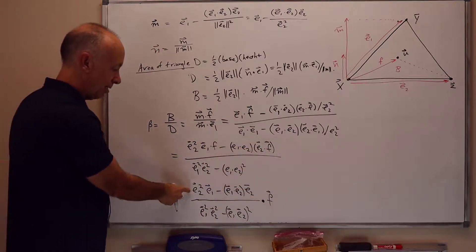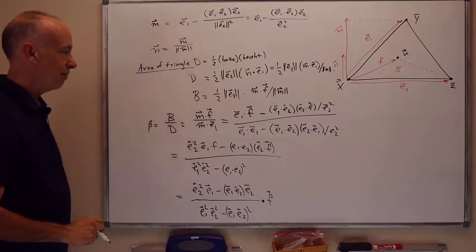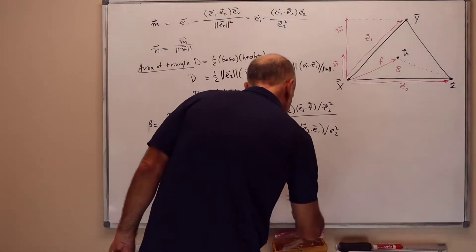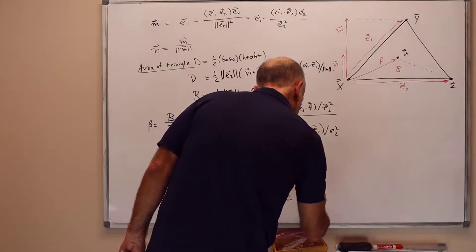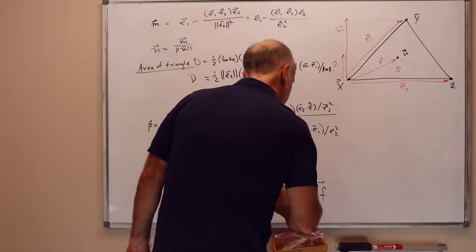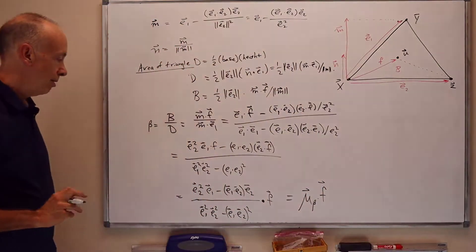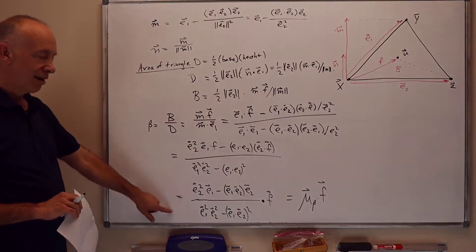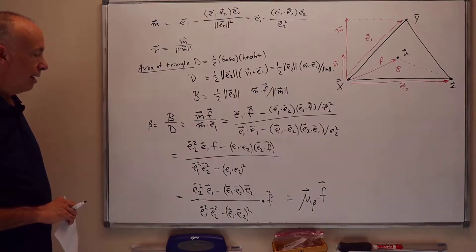The numerator is a vector. The denominator is a scalar. And we can write that as mu beta times dot f where mu beta is this fraction here. So in the end, what we end up with for the computation is note that mu beta depends only on e1 and e2.